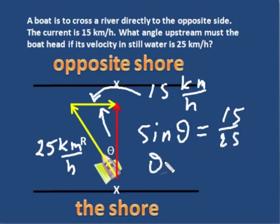Solve for theta by the inverse of the sine, the arc sine, and theta is 36.86 degrees.